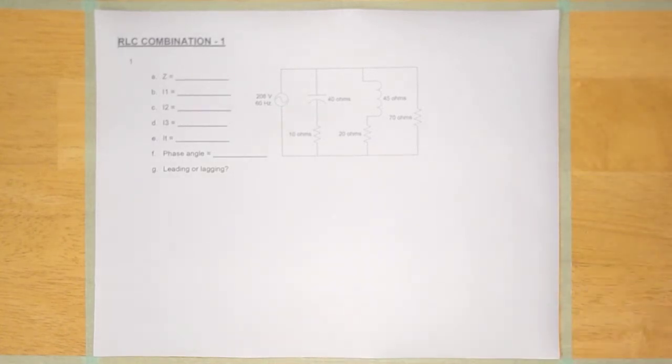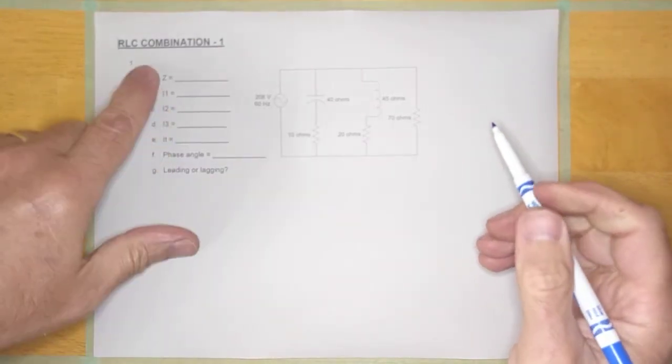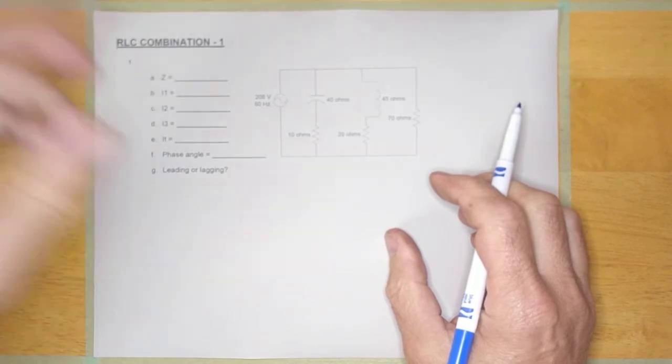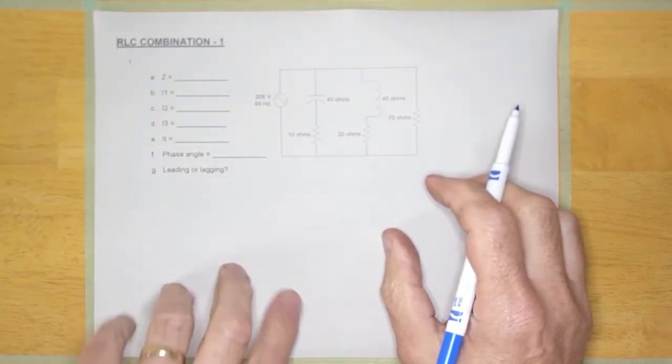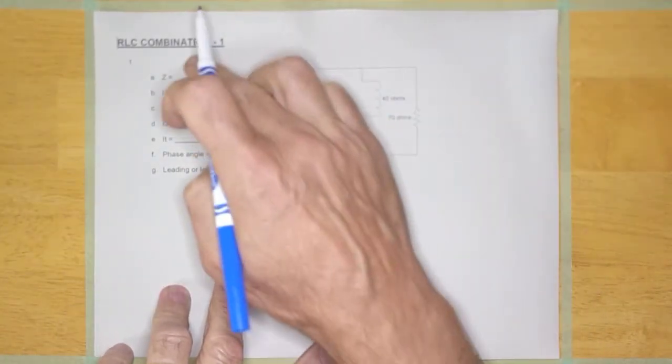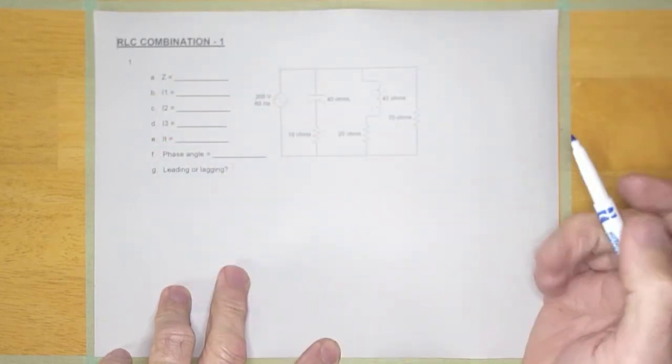Now when I do combination circuits, I always do them the exact same way. So it's asking for a lot of information here, but we're not going to worry about it for right now. We're going to try to simplify this circuit, then we'll come back and see if we can answer these questions.